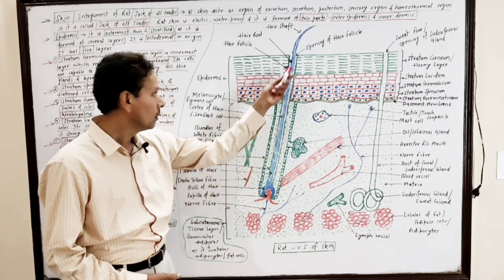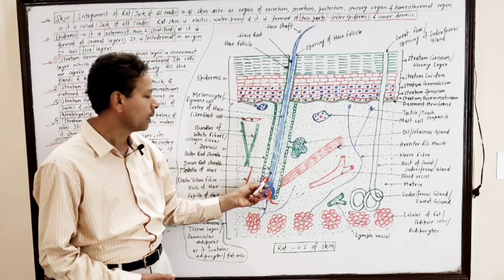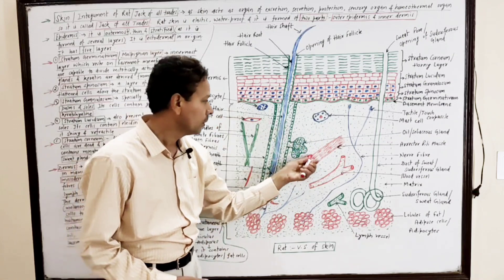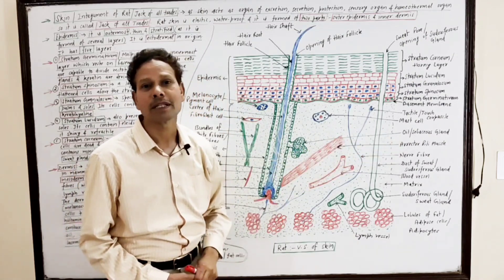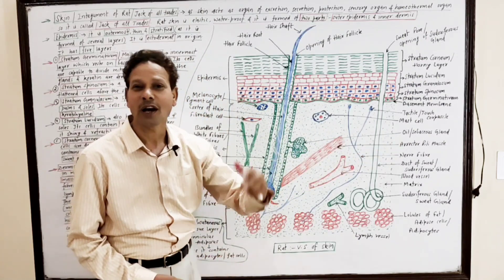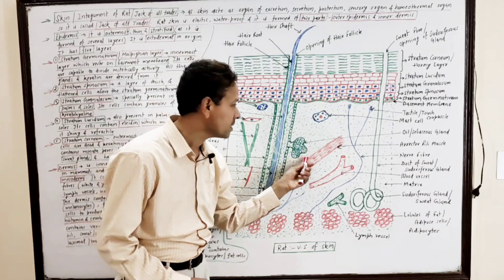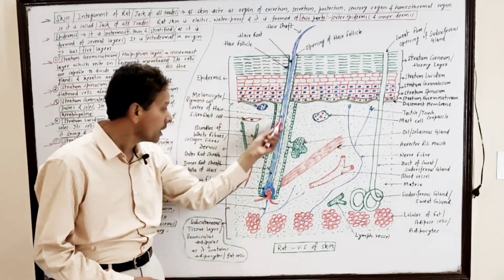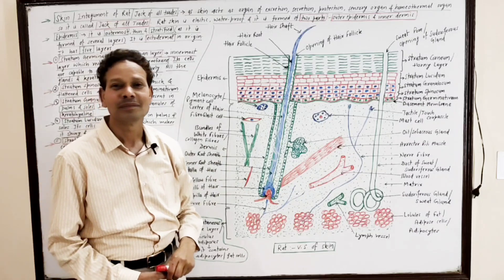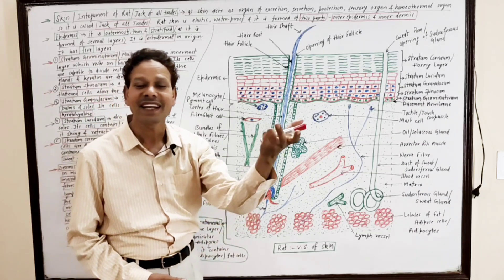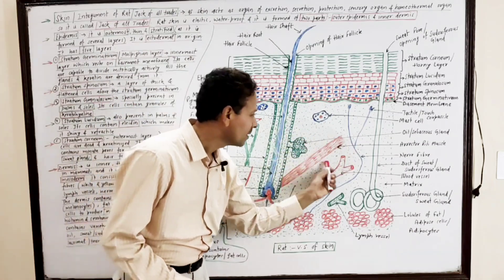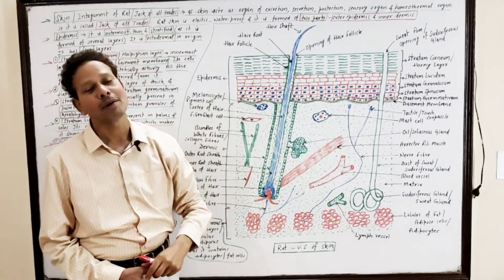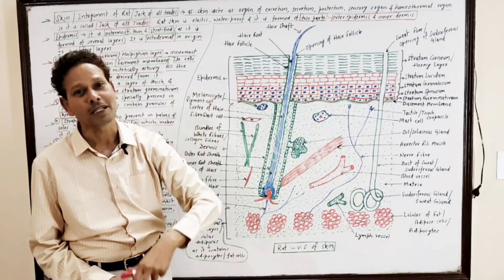The hair follicle and hair are connected with the erector pili muscle. Note for competitive exam students: the erector pili muscle is associated with skin hair and is the smallest body muscle.